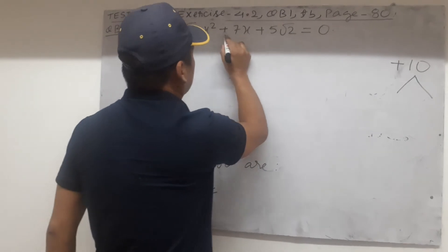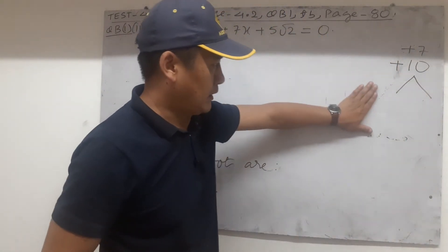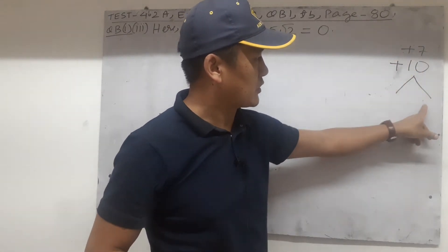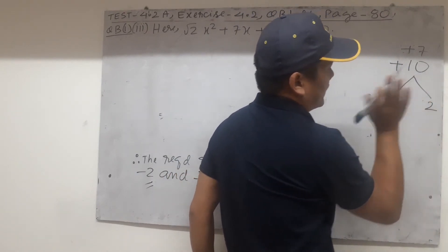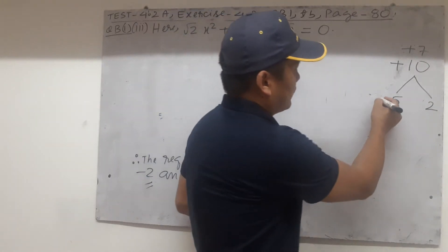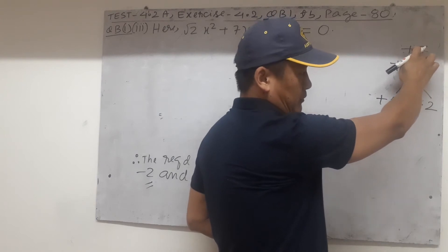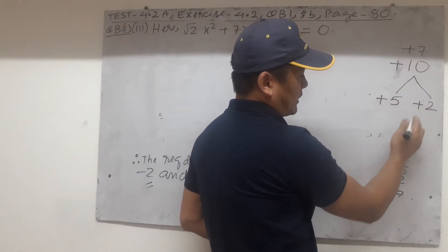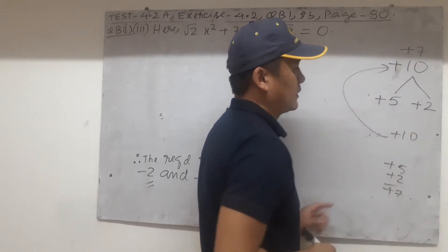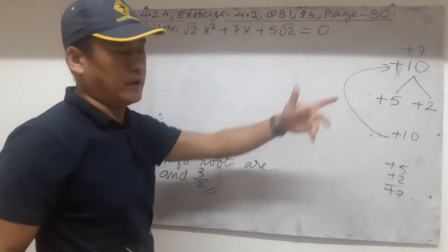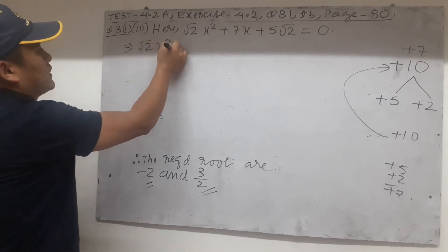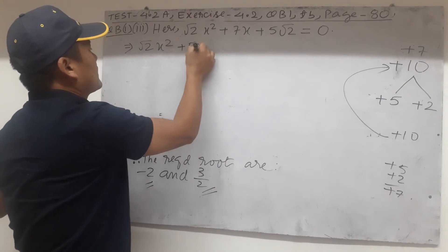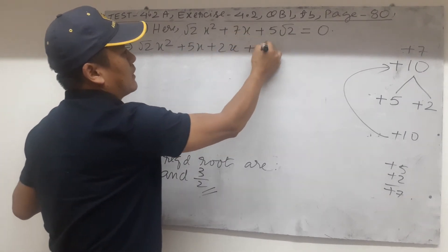We have to find factors of 10 that match plus 7. Trying 5 and 2: if we put both plus, then plus 5 plus 2 is plus 7, exactly matching the middle term. Multiply plus 5 into plus 2 is plus 10, exactly matching the product of first and third term. So this is the correct one. Splitting: root 2 x squared plus 5x plus 2x plus 5 root 2 equals 0, replacing plus 7x.